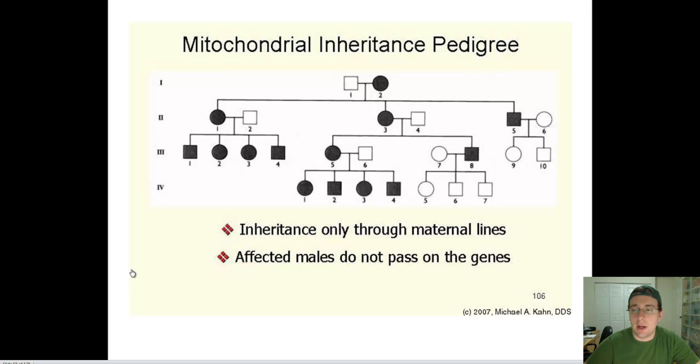In our last video we talked about this strange pattern of inheritance called mitochondrial inheritance. You can see that all the females that have the trait end up having children that have the trait. So every time you have a female with the trait, right here, every single offspring of that female will have the trait as well, and you can see that pattern happening on there.